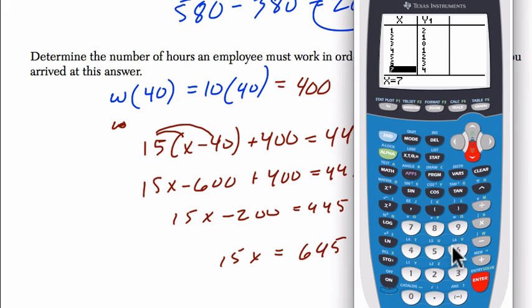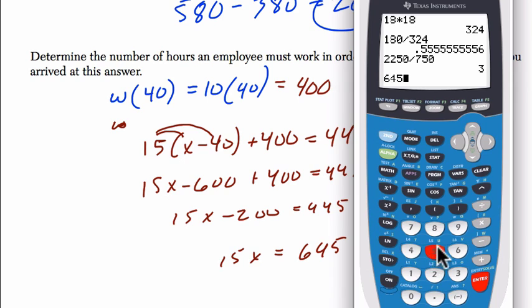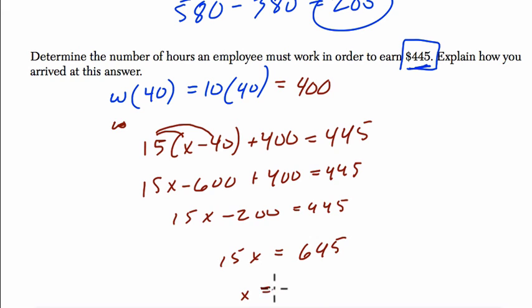We add 200 to both sides, and 15X equals 645. And do the division here. We get 645 divided by 15, and we get 43 hours.